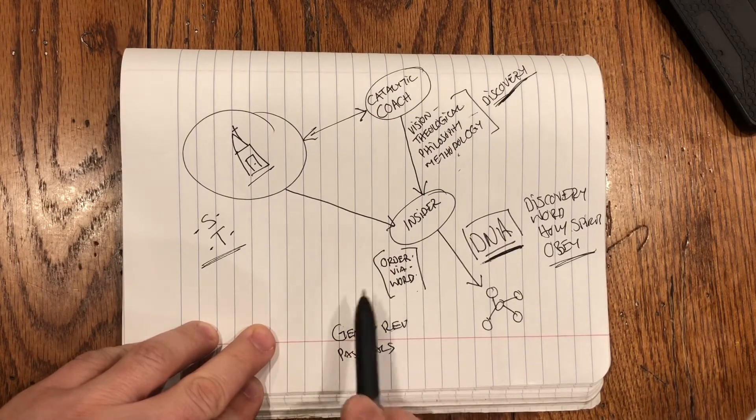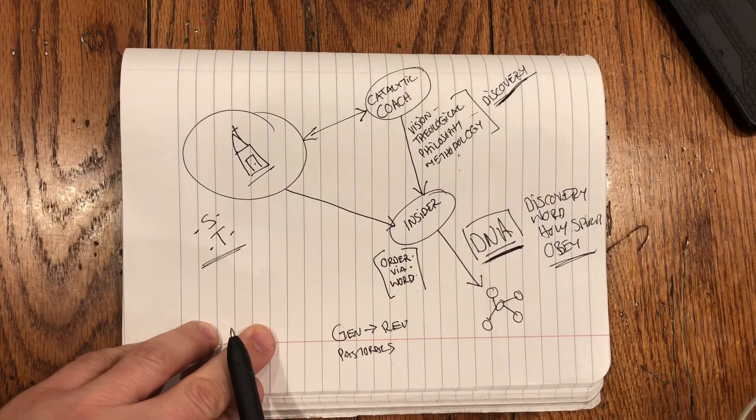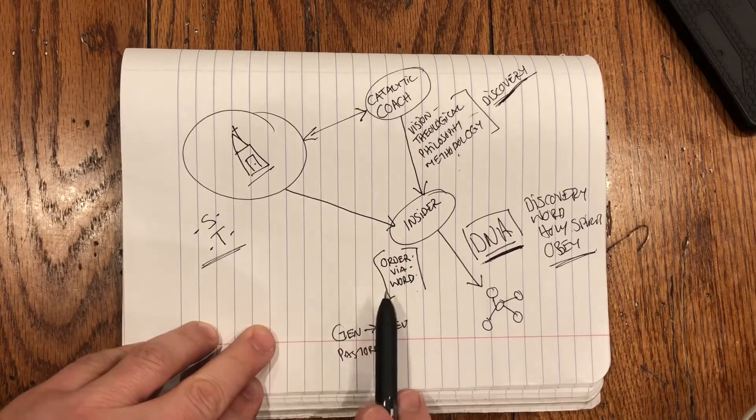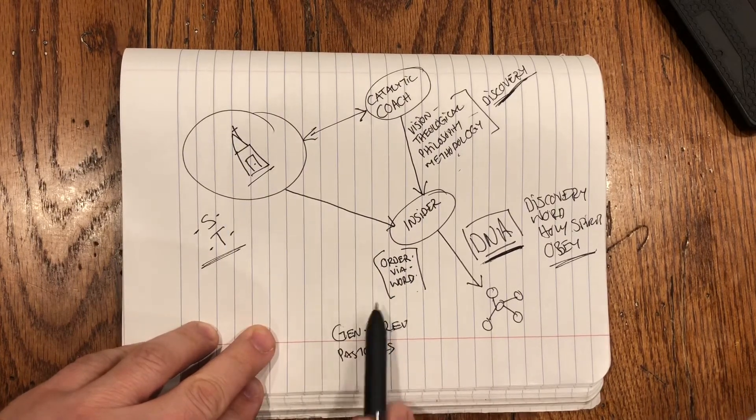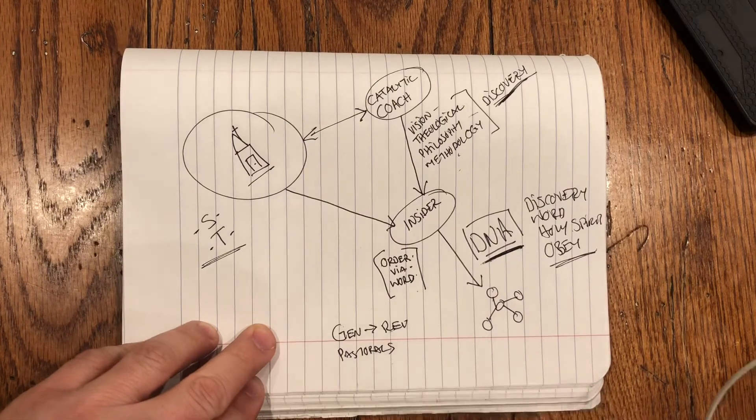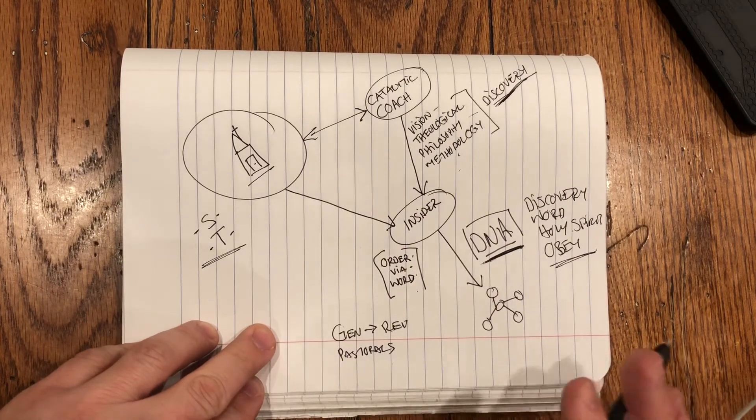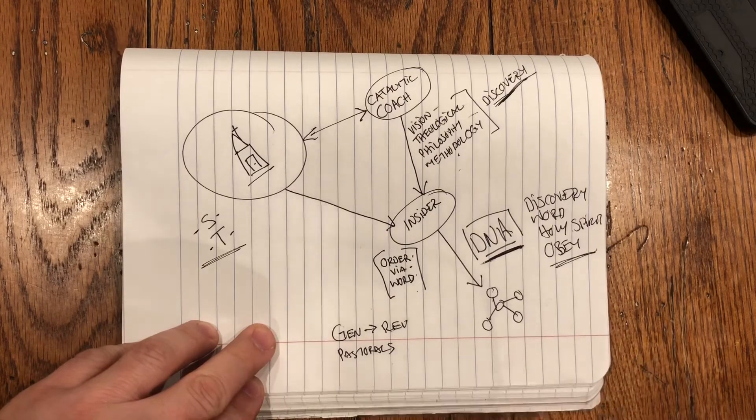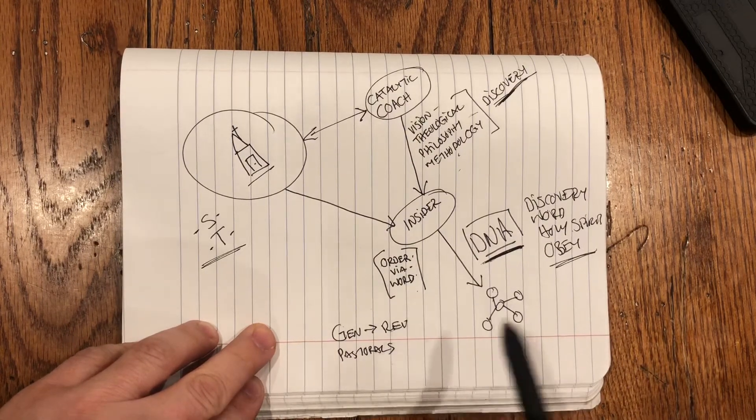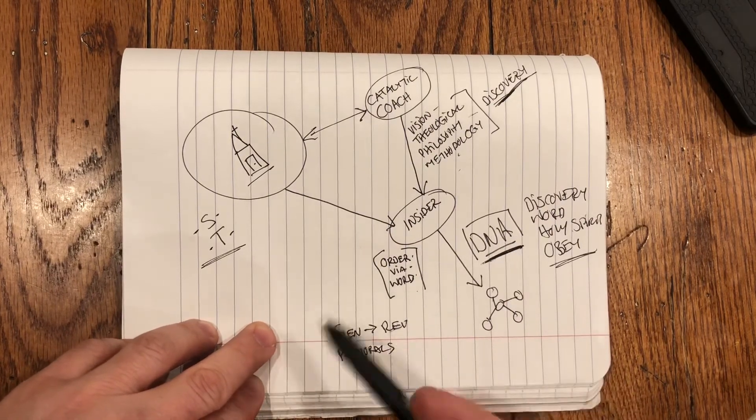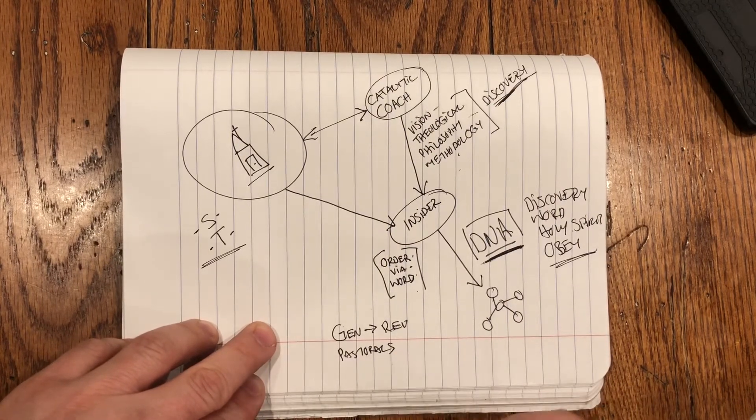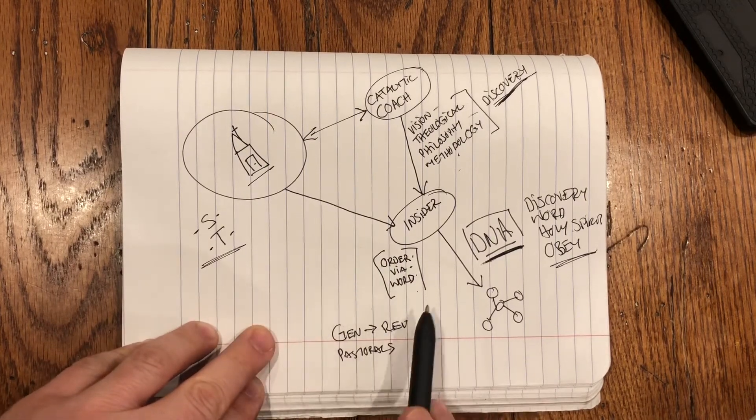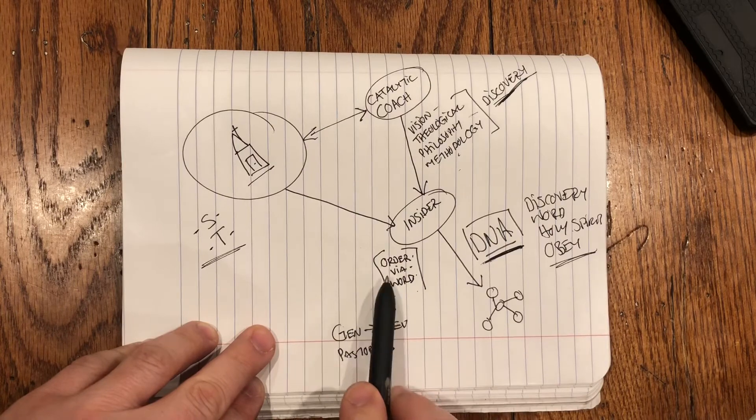He told Titus to offer order via the Word. That's why it was sound doctrine, because how do you bring order out of chaos? You bring it with the Word. And Titus was an external person put in Crete to provide order. And so, listen, don't fear the mess. The mess is—listen, having a baby is messy. Having a family is messy. Planting a church is messy. If it's not messy, I'm not so sure that it's really real. The New Testament church was messy. It wasn't perfect. People were sleeping with their mother-in-law. It was a mess. So what do you do in light of the mess? You provide order via the Word.